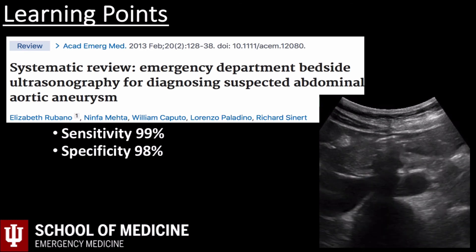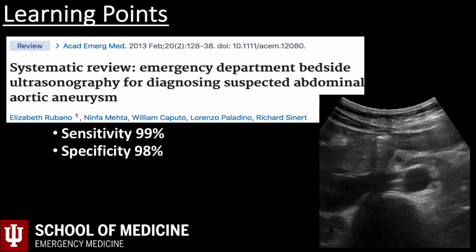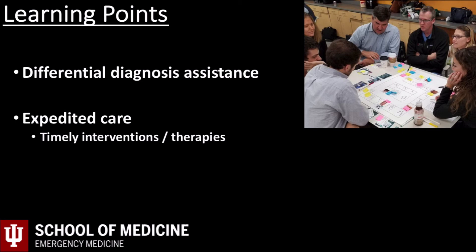Bedside ultrasound for evaluation of the abdominal aorta displays excellent testing characteristics and is incredibly easy to perform. As a tip, utilize a curvilinear probe to apply slow and steady pressure to displace bowel gas. Identifying the vertebral body shadow can also help confirm accurate anatomy. This is a great case because it represents how ultrasound is able to assist the bedside clinician, as the differential for sudden onset of flank pain is fairly focused and ultrasound can help obtain views of the kidney and the aorta to potentially help guide decisions and interventions.